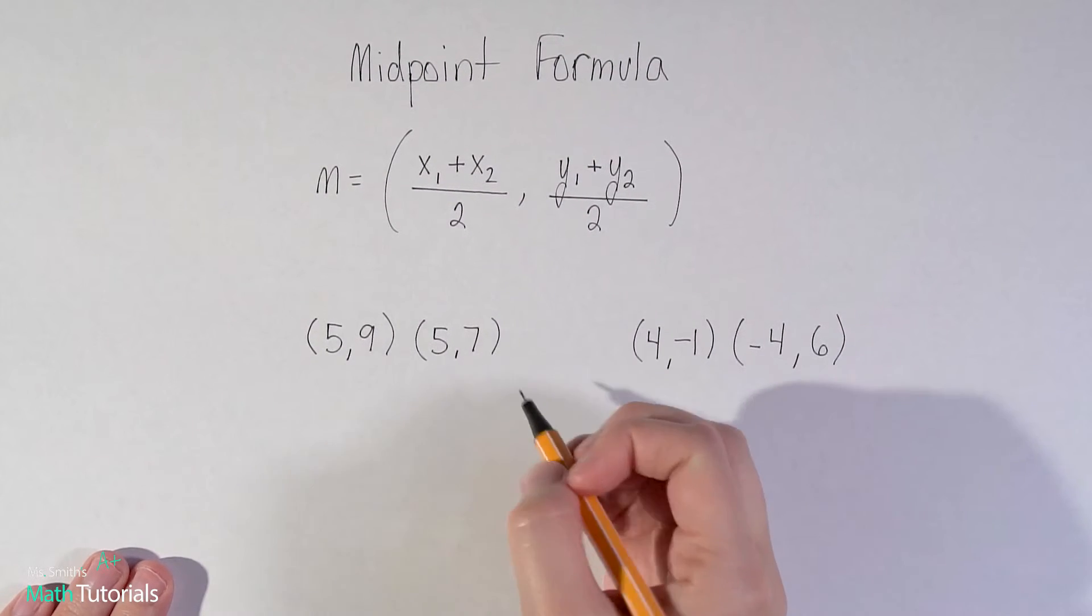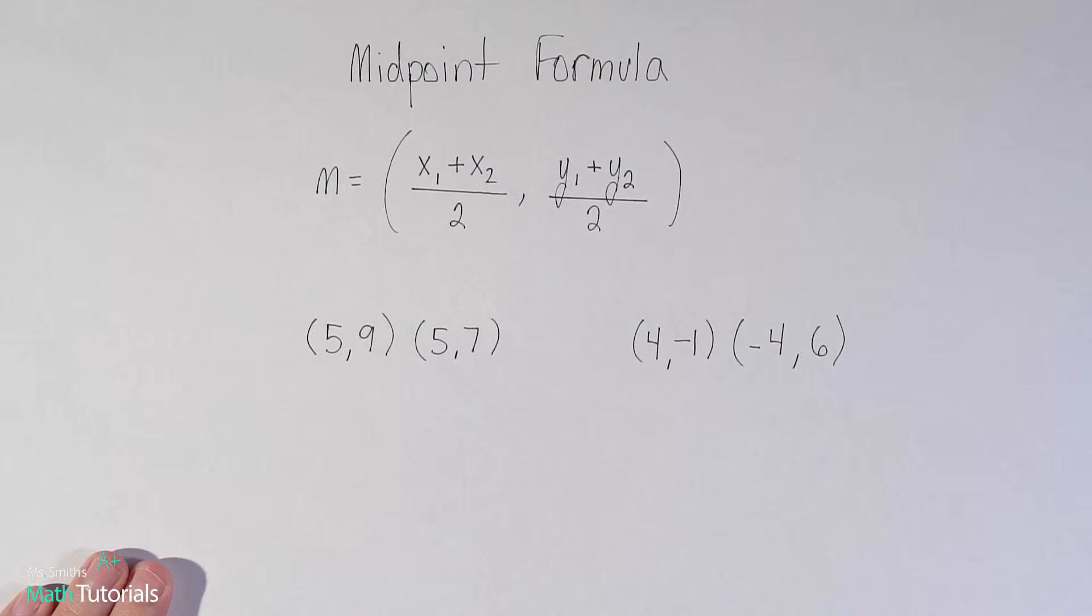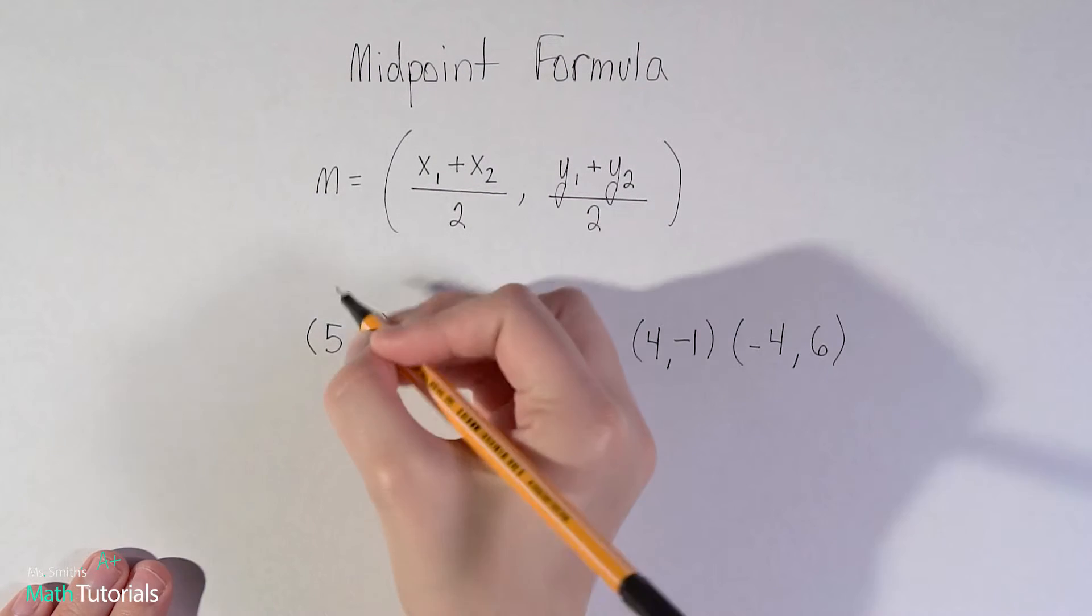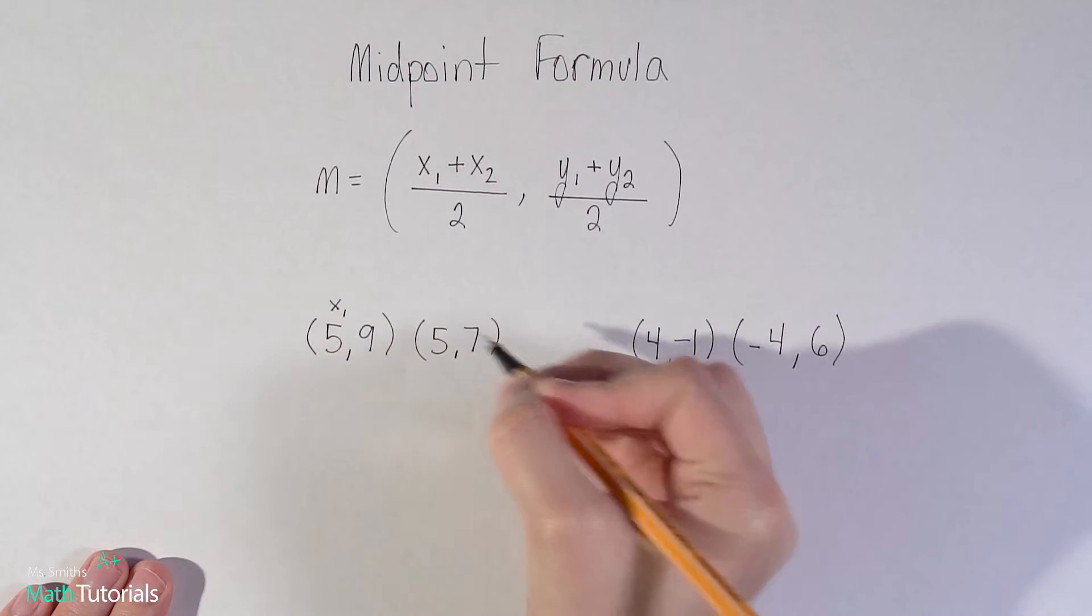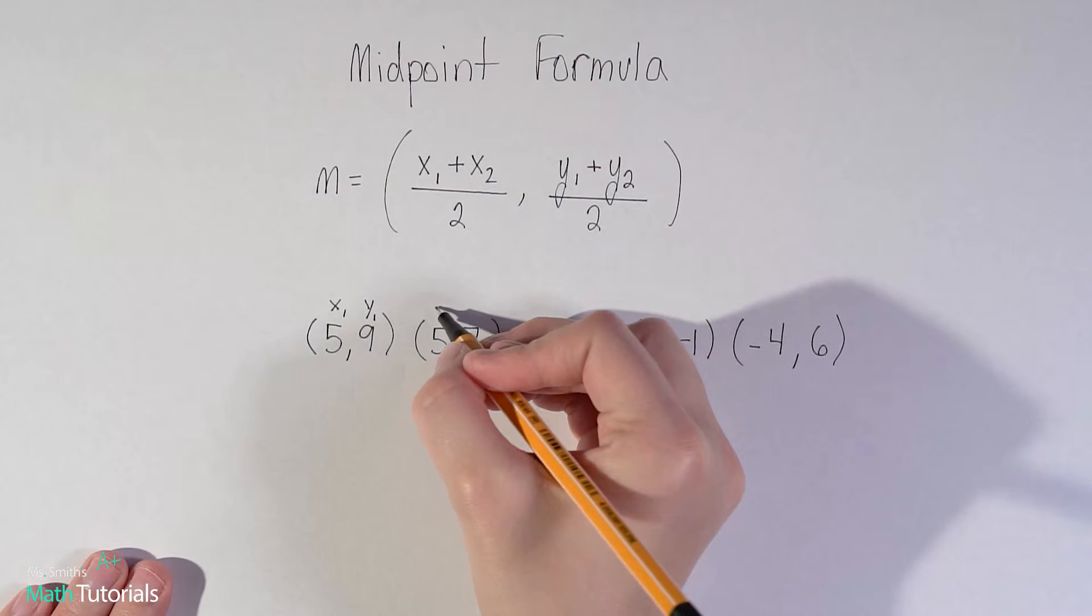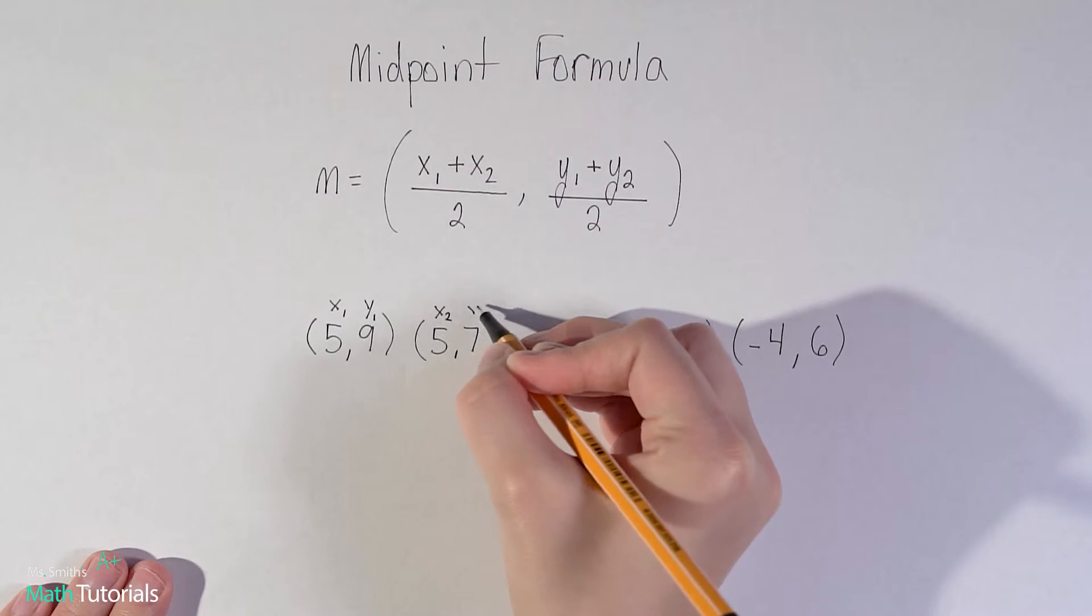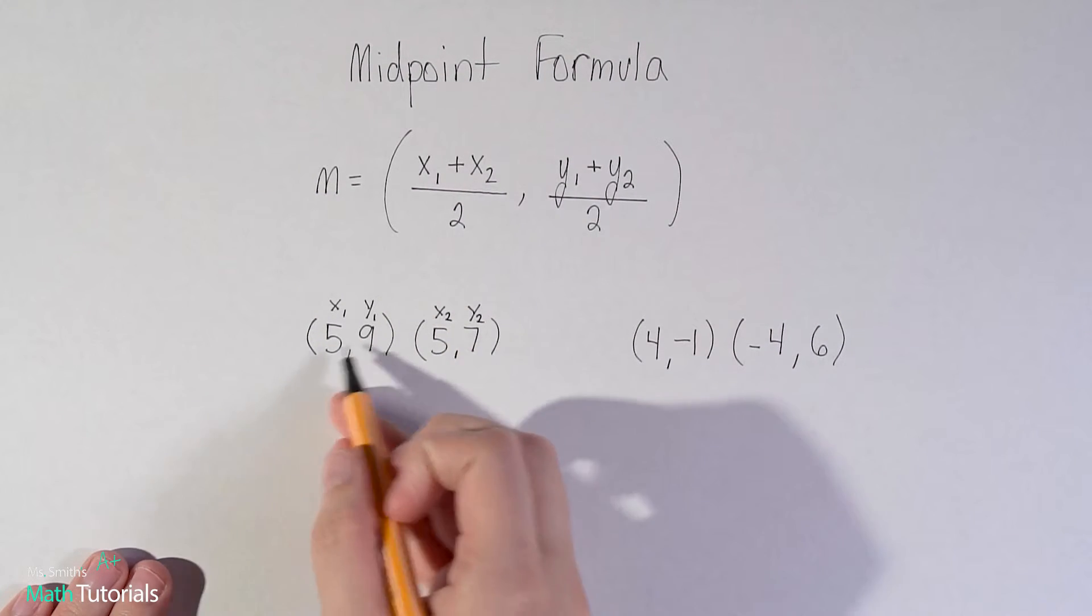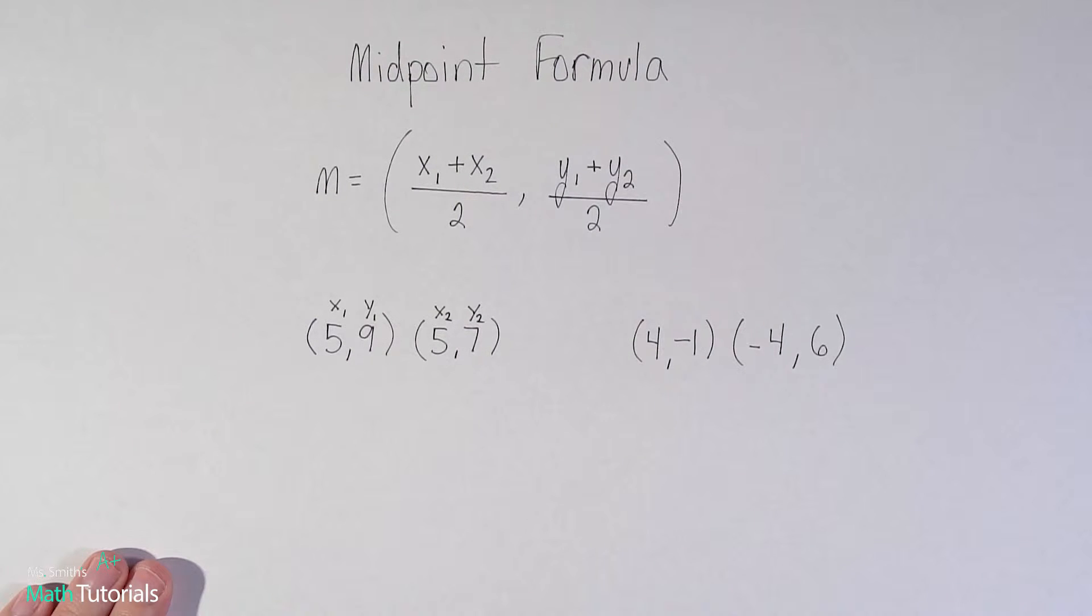Let's see it in action. First step is really to take the time and label what is going to be your x1, your y1 and so forth. This is our first point so I'm going to call this x1 and y1. This is my second point so I'm going to call this x2 and y2. It's really important to take that step so that we don't make a careless error here.